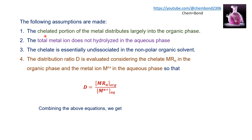Several assumptions are made: the chelated portion of the metal distributes largely into the organic phase, since the chelate has greater solubility in the organic phase than the aqueous phase. The total metal ion does not hydrolyze in the aqueous phase — it remains as a metal ion without interacting with water. Additionally, the chelate is essentially undissociated in the non-polar organic solvent and remains in neutral form.